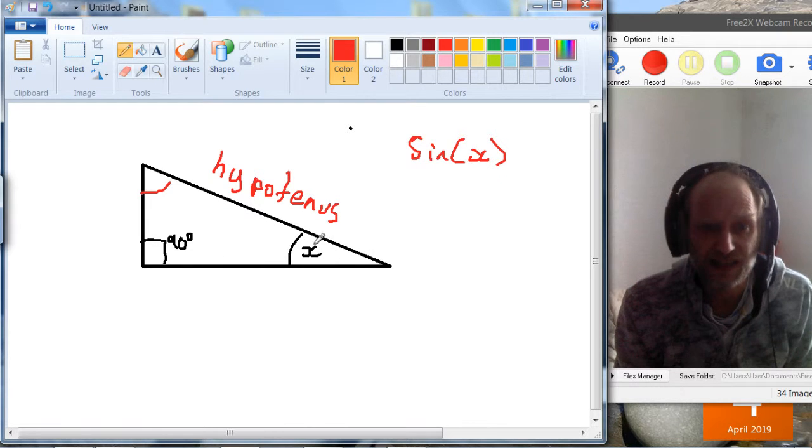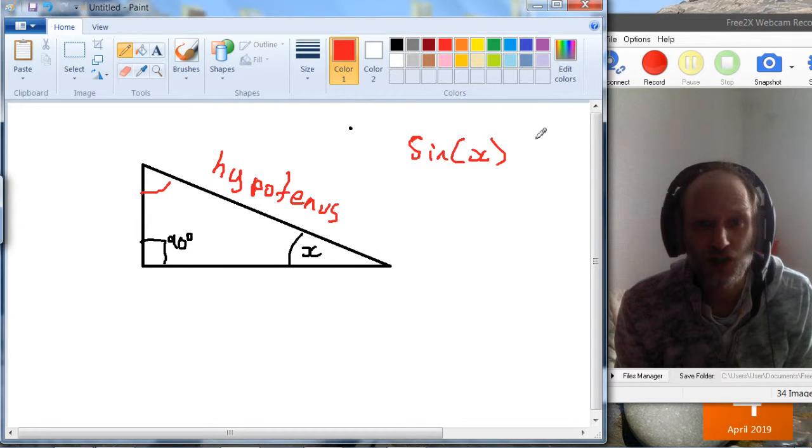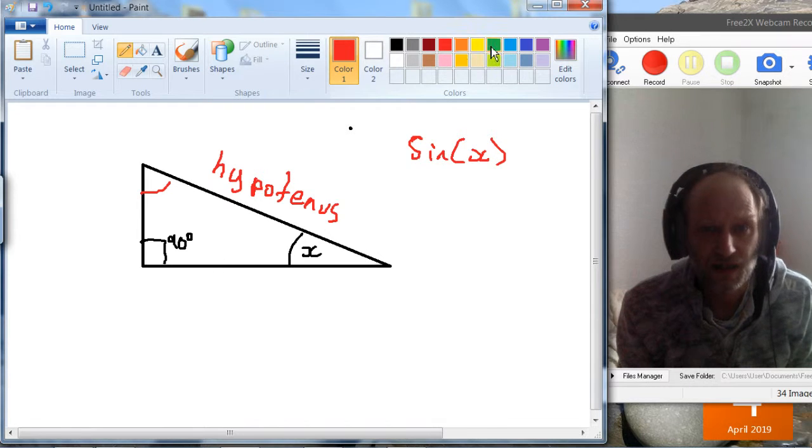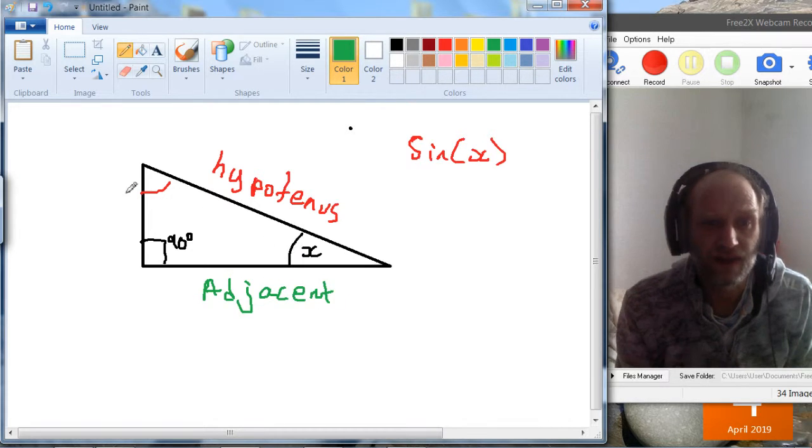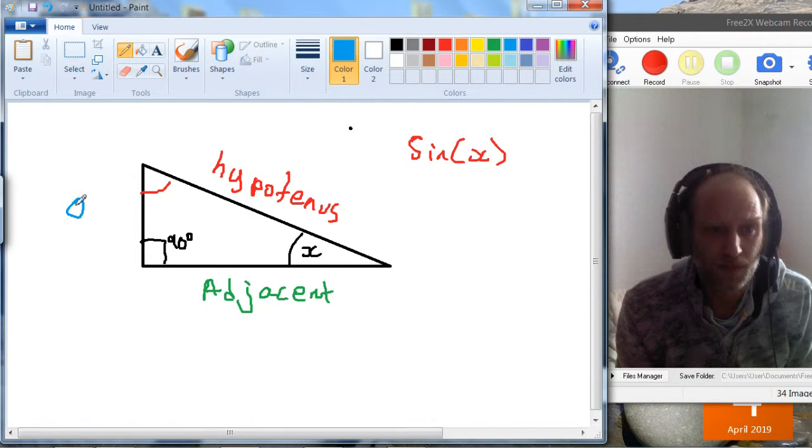Now if the angle we're giving sine is x, then that's this angle and we have to name the other two sides according to this angle. So we're giving sine the value of x, so the line that's next to x we call the adjacent, which just means next to. And the line that's opposite we call the opposite.